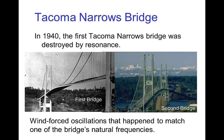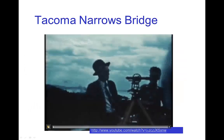We can see a much more dramatic example of resonance with slower oscillations that are actually visible — the resonance that caused the collapse of the first Tacoma Narrows Bridge. A second bridge has since been built, but in 1940 resonance occurred not because of sound but because of wind blowing past the bridge.